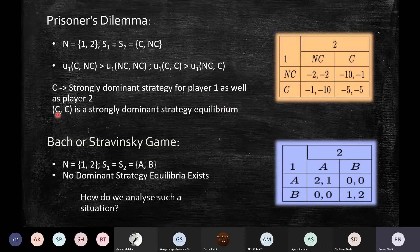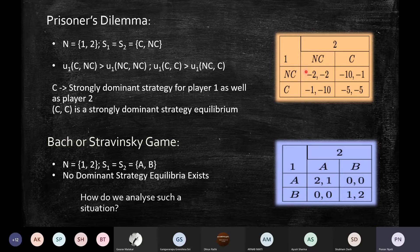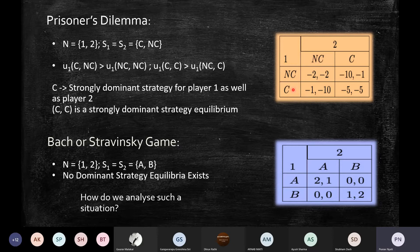Since both players have confessing as their strongly dominant strategy, (C, C) is a strongly dominant strategy equilibrium. The strategy profile (NC, NC) is not even a very weakly dominant strategy equilibrium — if player 2 chooses not to confess, player 1 would still be better off confessing. So for player 1, confessing is the strongly dominant strategy regardless of what the other player chooses.